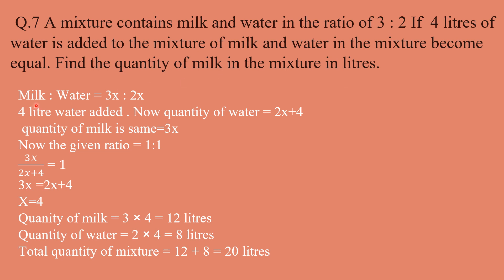Let us assume milk and water are in the ratio 3:2, so we take milk as 3x and water as 2x. Now, 4 liters of water is added to this mixture. Therefore, the quantity of water, which was originally 2x, becomes 2x plus 4. But the quantity of milk remains the same at 3x. So in the new mixture, milk is 3x and water is 2x + 4, and the new ratio is 1:1.